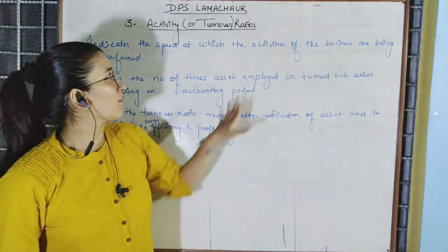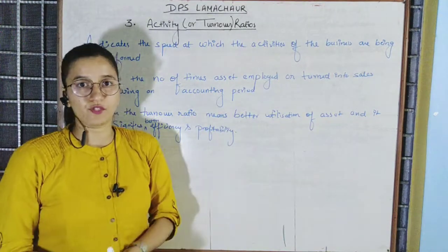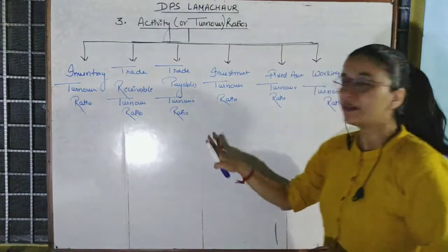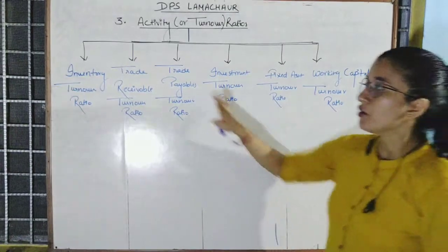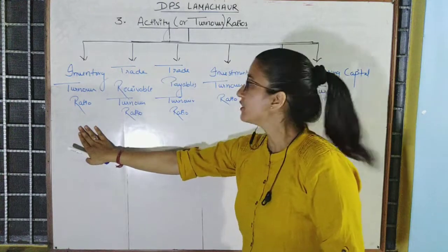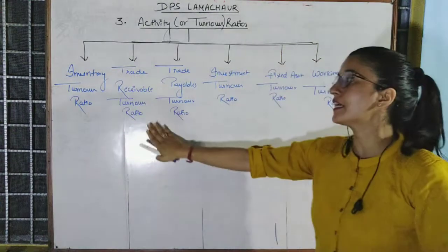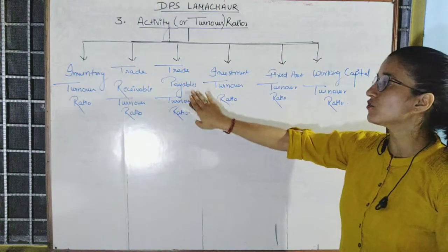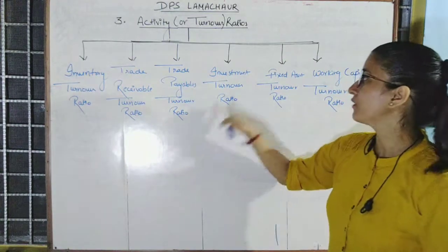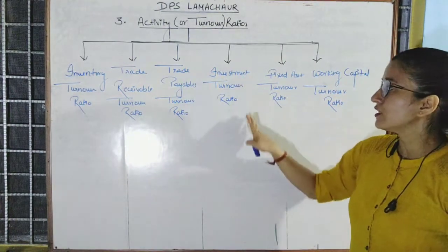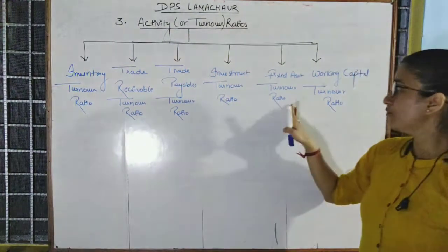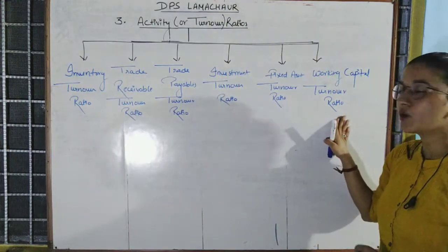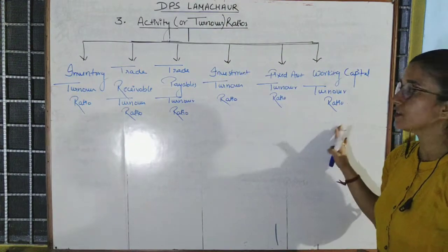These are the three key points under activity turnover ratios. There are six types of activity or turnover ratios: first is inventory turnover ratio, second is trade receivable turnover ratio, third is trade payables turnover ratio, fourth is investment turnover ratio, fifth is fixed asset turnover ratio, and sixth is working capital turnover ratio.